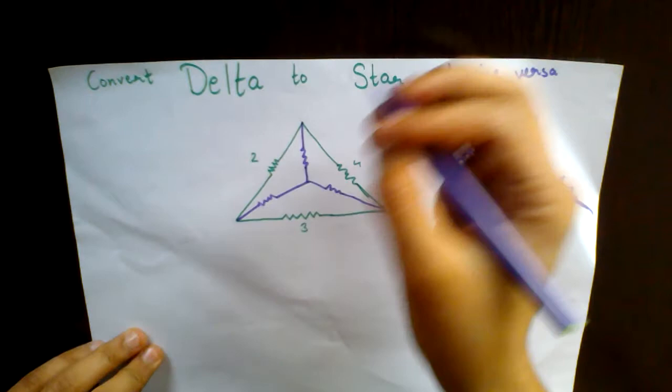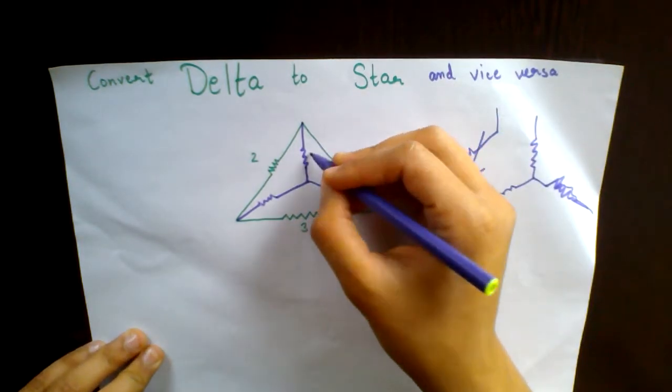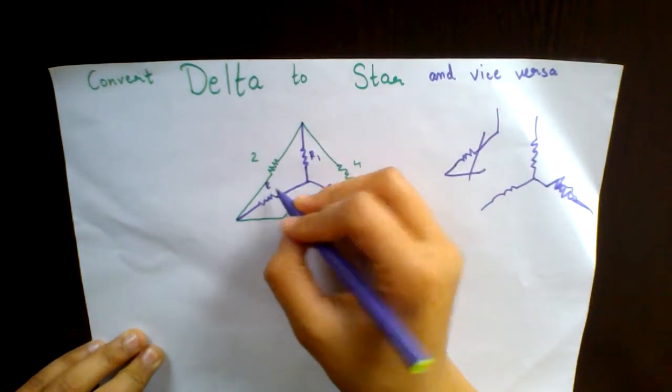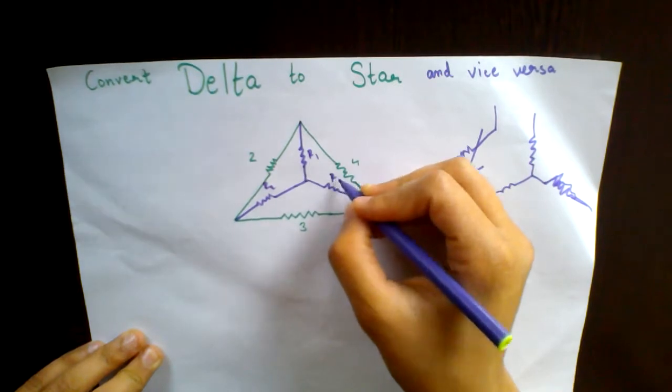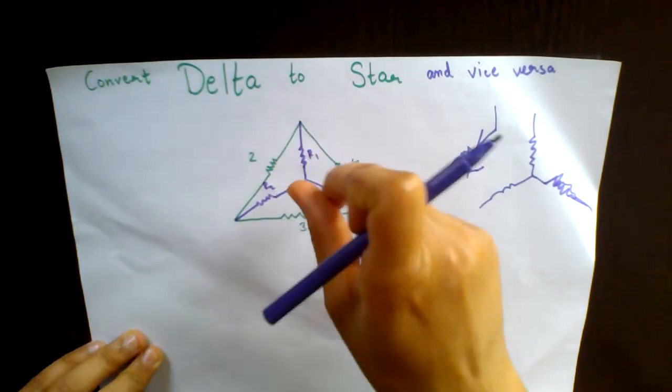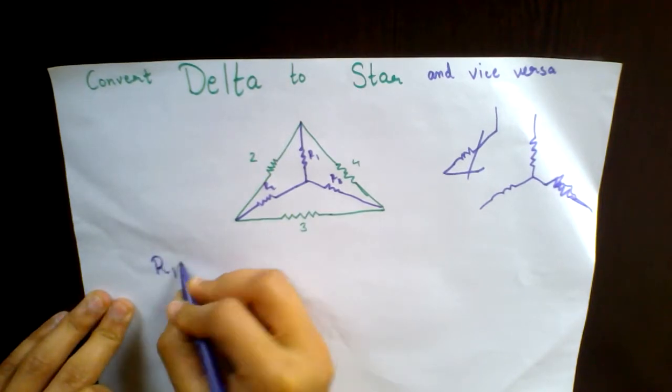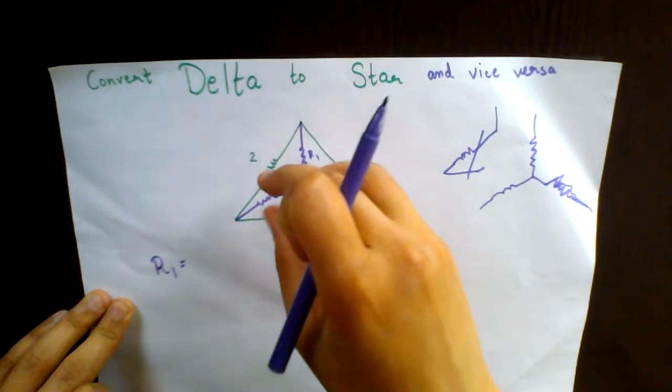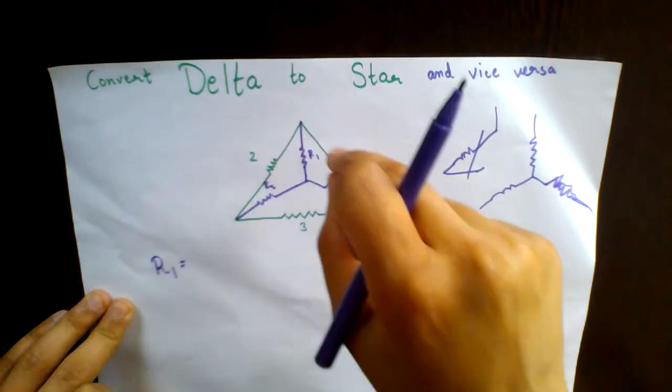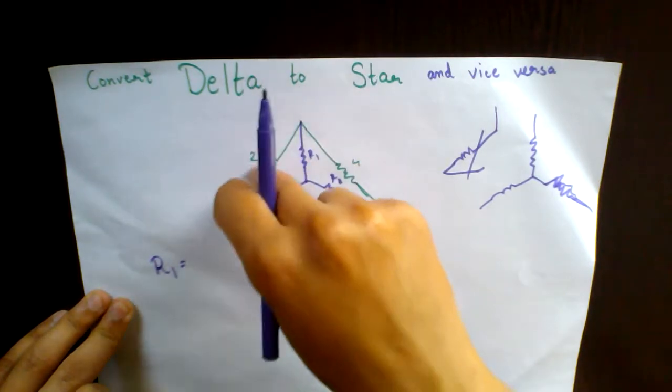Okay, imagine these are resistances R1, R2, R3. Now first, you start initially with R1. What you do is write R1 over here, and then you multiply 2 into 3 upon 2 plus 3 plus 4.